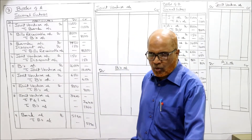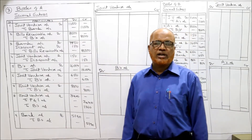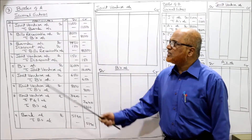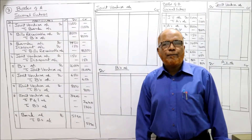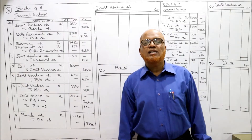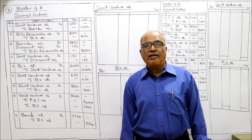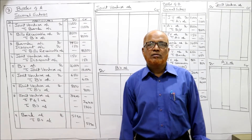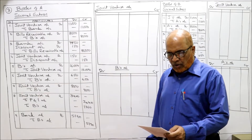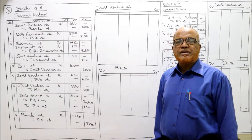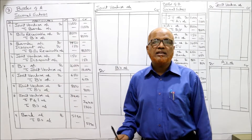We are required to pass the journal entries and ledger accounts in the books of both the parties. First of all we pass the journal entries in the books of A. If you are perfect on journal entries, you can easily make the ledger accounts - ledger accounts depend on journal entries. So now, A purchased goods worth rupees 10,000 and paid 1,000 rupees expenses, total 11,000 rupees spent by A.